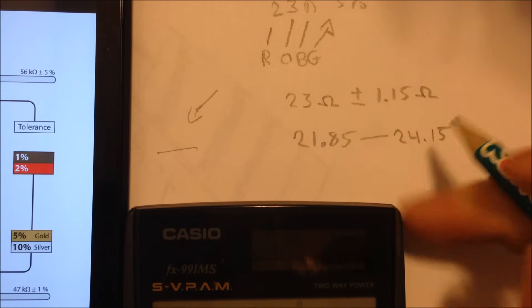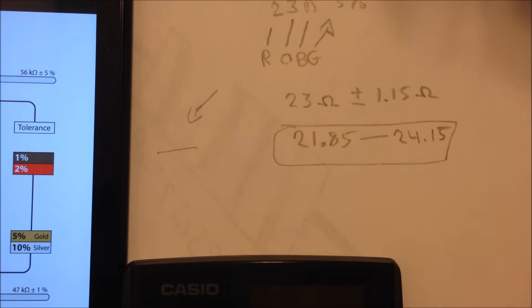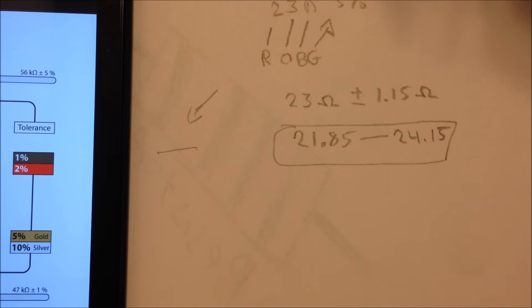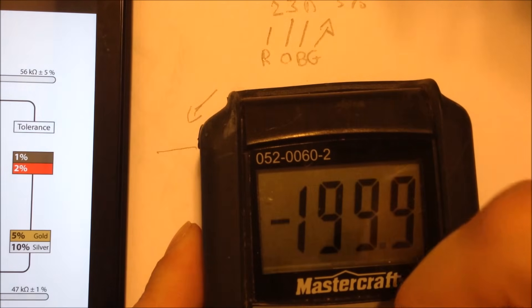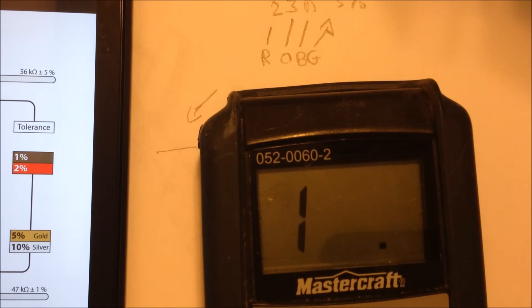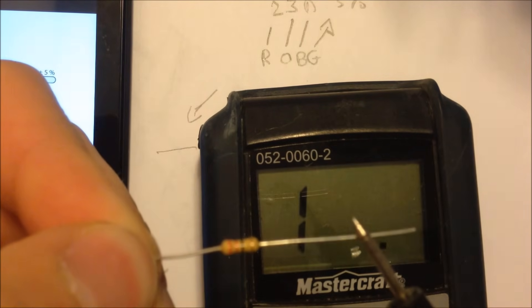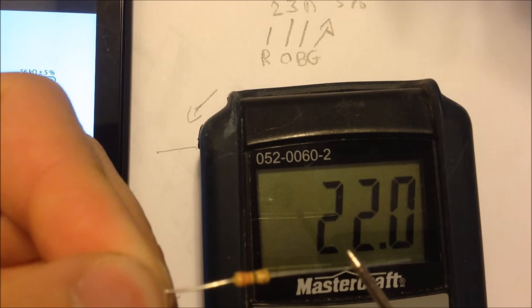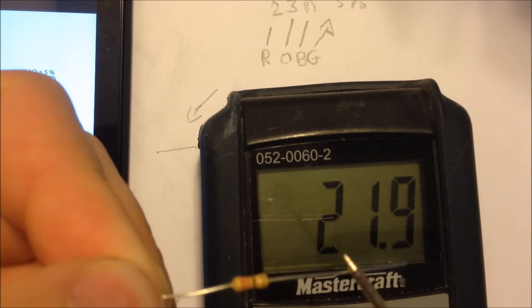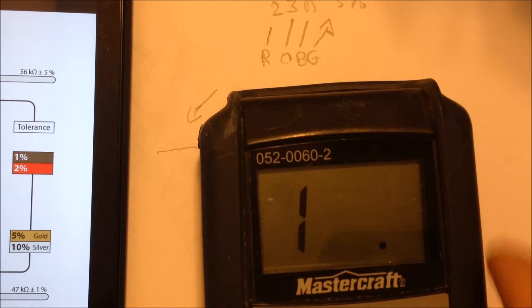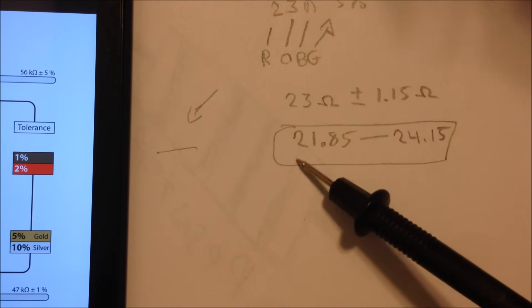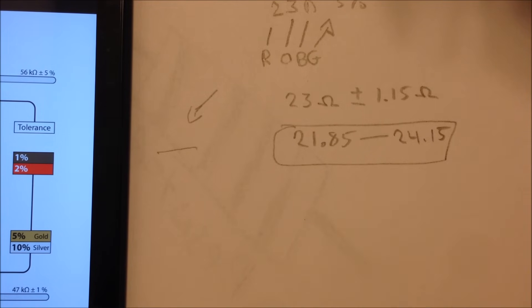And then to confirm that, we'll just get the multimeter here, set it to the 200 range. All right, so I'll put one lead here on one side and then the other one on the other side here, and we get 22, wait for this to settle out here, so 21.9-ish ohms, which is in our range here. So yay, it works.